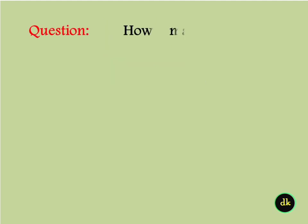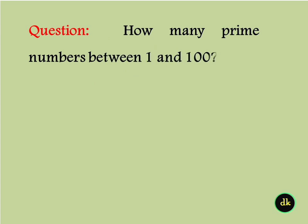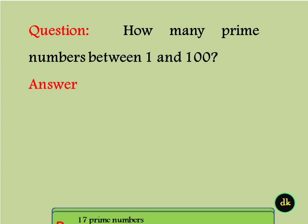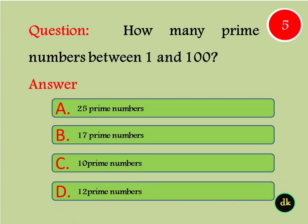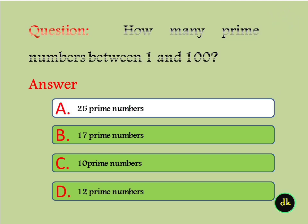How many prime numbers are between 1 and 100? The answer is 25 prime numbers.